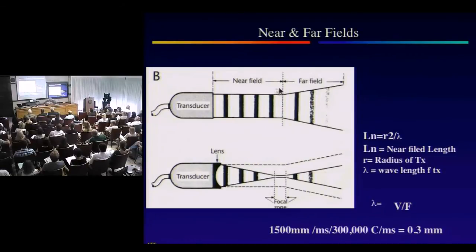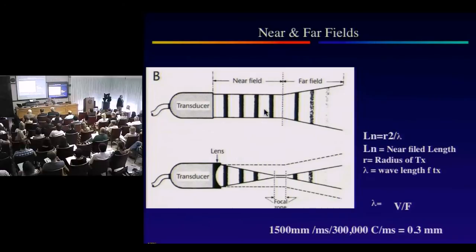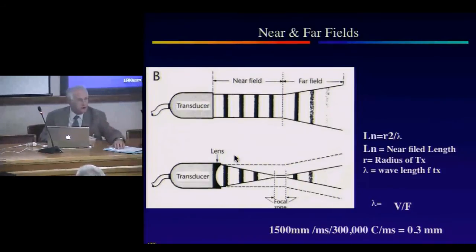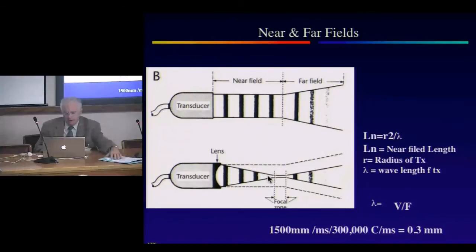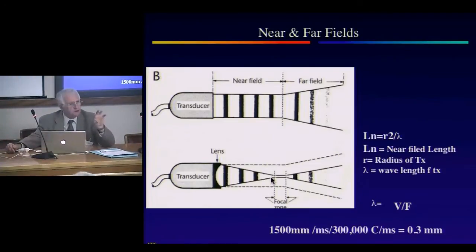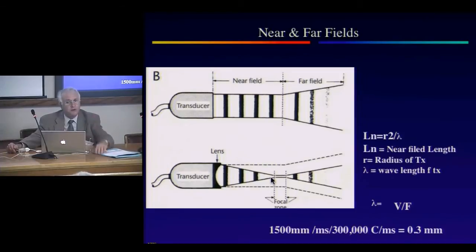A beam traveling through an ultrasound field has the characteristic that as it disappears, it diverges. The higher the frequency, the quicker the beam diverges — which is why pediatric ultrasound is more difficult than adult ultrasound, because you have to focus that beam. Beams are focused using an acoustic lens, which acts just like a pair of glasses, or using electronic focusing, which is much more important because the beam can be focused in two or three dimensions rather than just one.